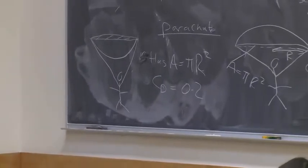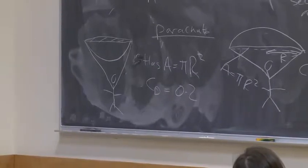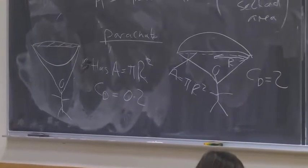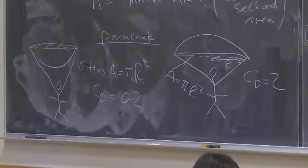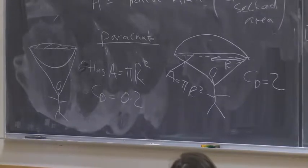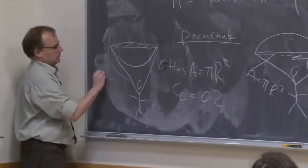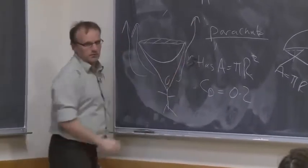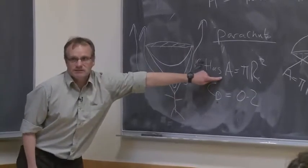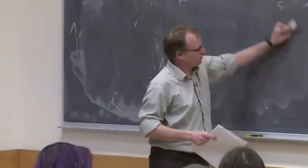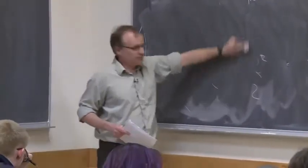You see the difference. One's going to go really fast and one's going to go really slow. The one on the right is going to reduce your speed to a few meters per second and get you to the ground nice and slowly. The one on the left, you're going to shoot down to the ground because it's much easier for the air to flow past this one. This one has a very low drag coefficient, but the cross-sectional area is the same.